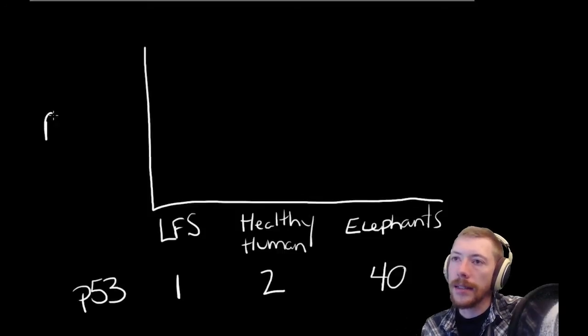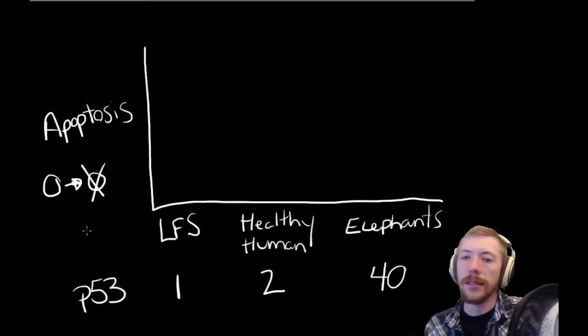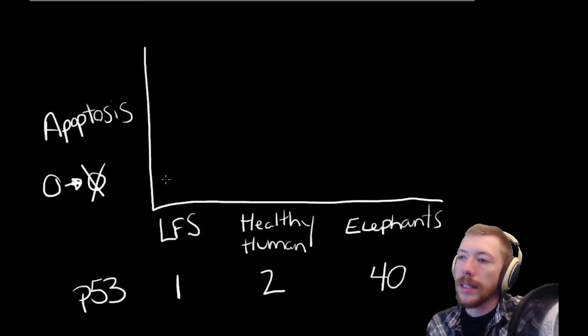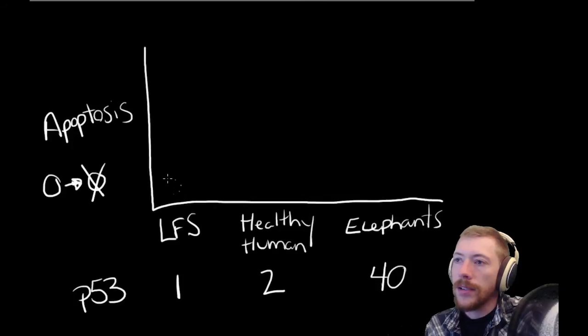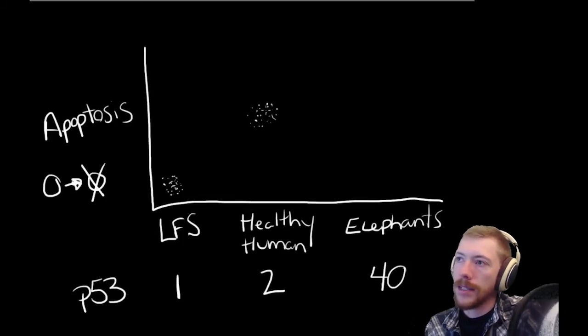And we look at how frequently apoptosis occurs. So how often is a cell being designated to apoptosis? And in this way, this is preventing potential cancer. If you look at somebody that has LFS, very few cells are undergoing apoptosis. So a lot of cells that have damage are allowed to survive. In a healthy human, we have more activity. This is what you would expect in a healthy adult, this range of apoptosis.